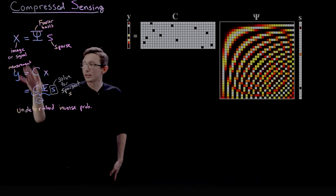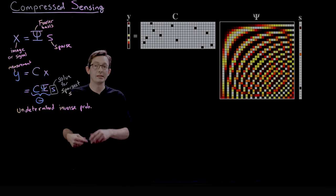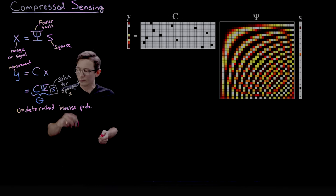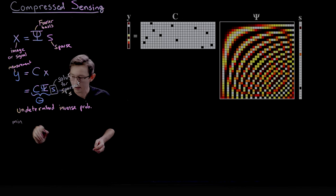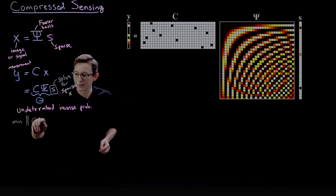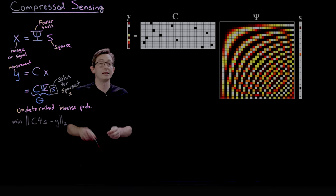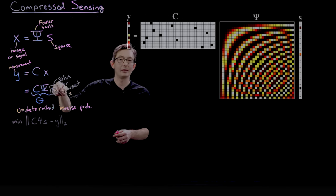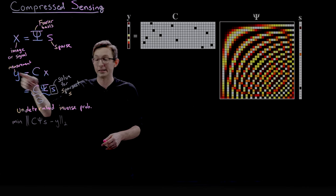So there are many ways to solve for s here. And I'm just going to write down a few different ways of writing this optimization problem and then show you what this looks like. So what I could write down is I could write down that we're trying to minimize, we're trying to find s that minimizes C times psi times s minus y. And we're going to try to minimize this in the two norm because I just want y and C times psi times s to be as close as possible. And effectively, I want this to be zero. I want to find s that exactly satisfies this.